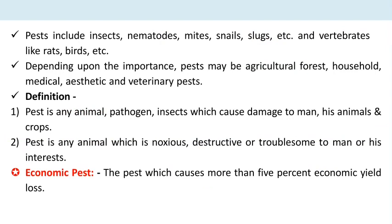Depending upon importance, pests may be agricultural pests, forest pests, household pests, medical pests, aesthetic pests, and veterinary pests. Agricultural pests are those which cause yield losses in our fields. Forest pests attack forest plant species. Household pests include cockroaches and ants that damage kitchen products. Medical pests are those that carry disease to human beings, like mosquitoes, houseflies, and bed bugs. Veterinary pests, such as ticks and mites, attack veterinary animals.